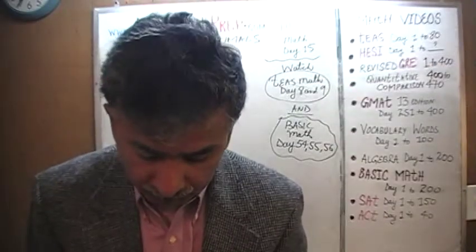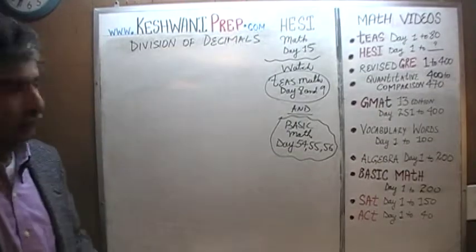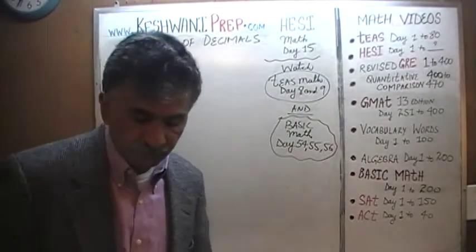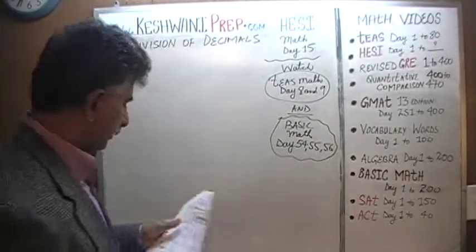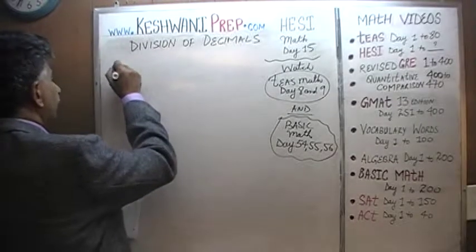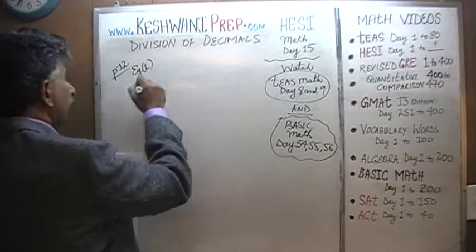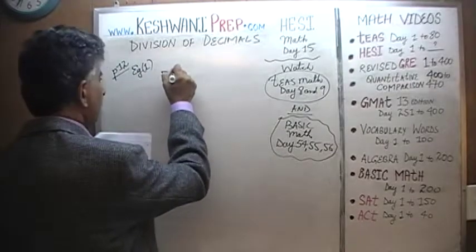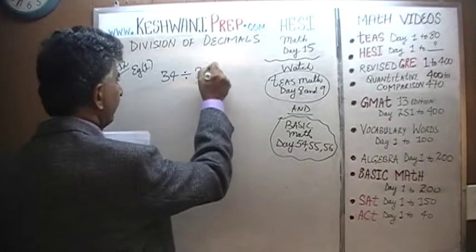We are in the process of solving problems dealing with the notion of division of decimals. Today is our lesson number 15. We are going to do problem number 1 — Example number 1 on page number 12, which is 34 divided by 2.5.